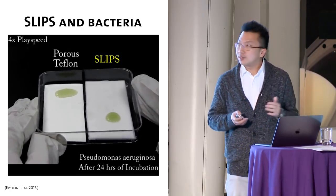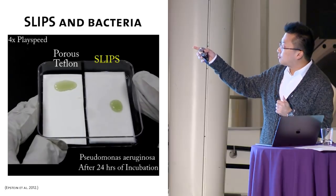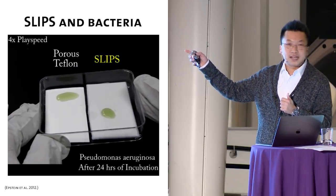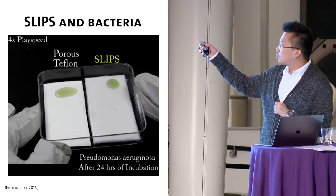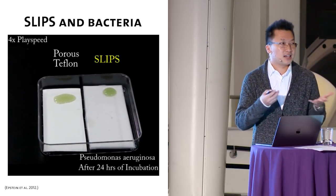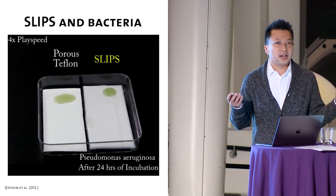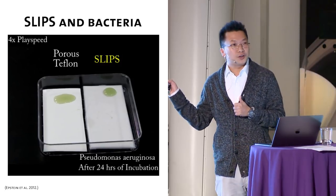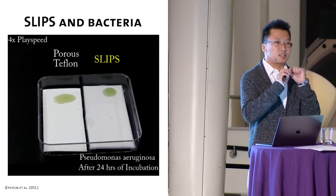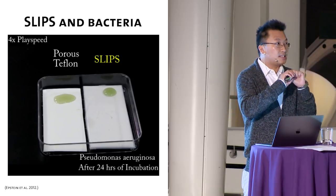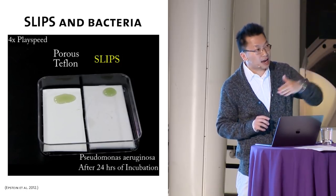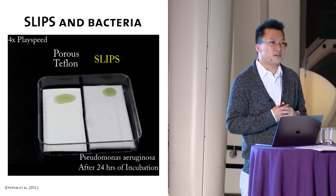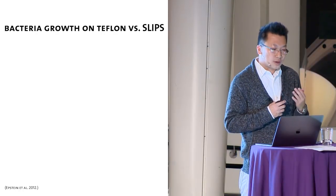After 24 hours, bacterial biofilm will be formed on the Teflon surface. As you can see, the drop is just stuck there. But on slips, the drop is still maintaining its mobility, indicating that bacteria doesn't really accumulate on the surface. If this doesn't convince you, we have further tried to put slips and the Teflon coating inside a catheter and then throw bacteria solution inside this catheter over an extended period of time.